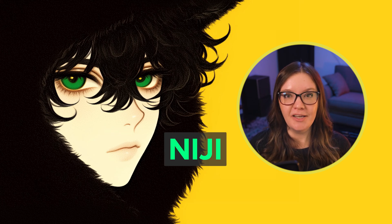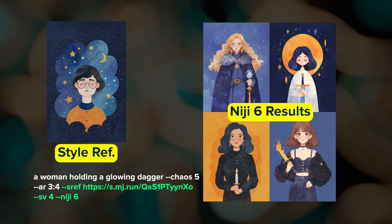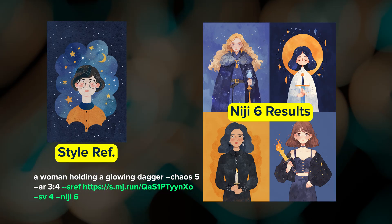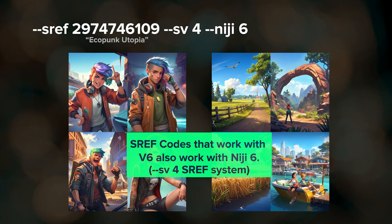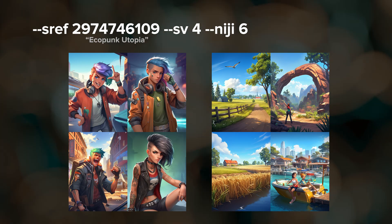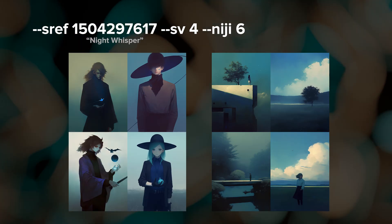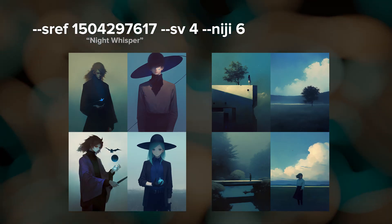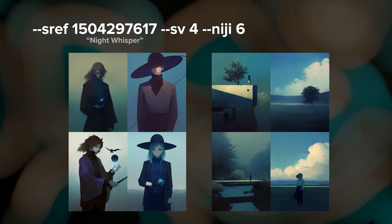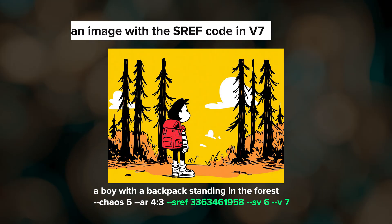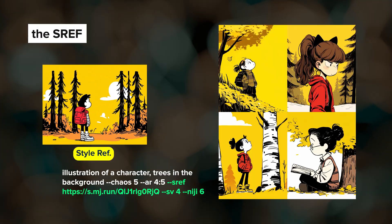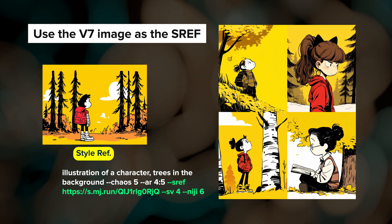We've talked a lot about using style references with Midjourney's v6 and v7 models, but there's one more model where you can use them: Midjourney's anime trained model Niji. The most recent version is Niji 6. You can use both images and codes as style references with Niji 6. Sref codes that work with Midjourney's v6 model also work with Niji 6. To use Niji just add --niji 6 to your prompt along with your sref code. Keep in mind that the newer sref codes from the style explorer won't give you the same styles on Niji 6 because Niji uses the older sv4 style reference system. If there's a newer sref code you want to use with Niji, create an image with that sref in v7, then use that image as a style reference in Niji instead of using an sref code number.